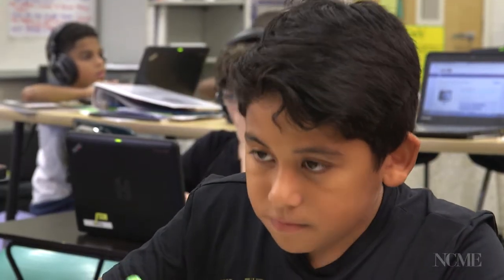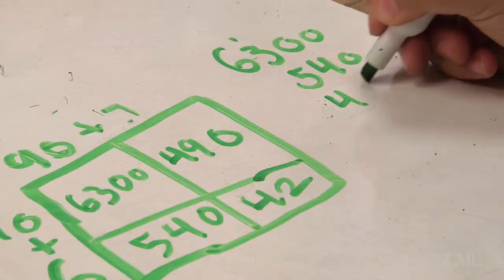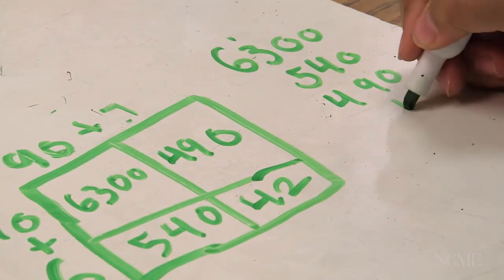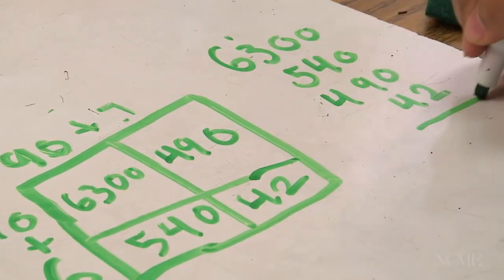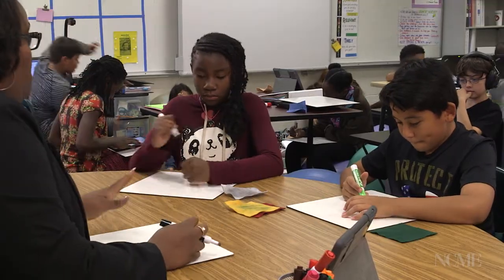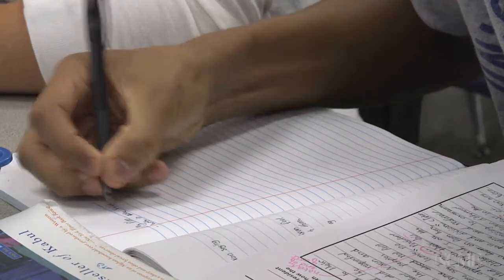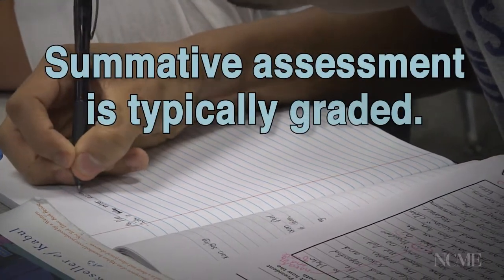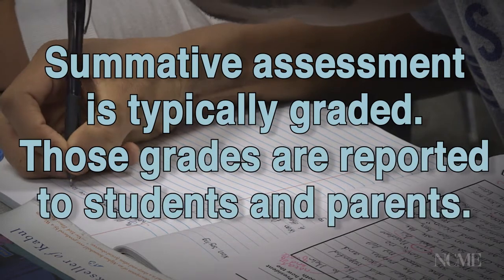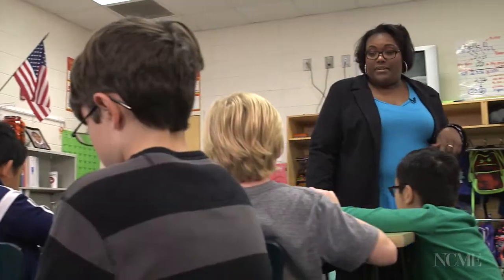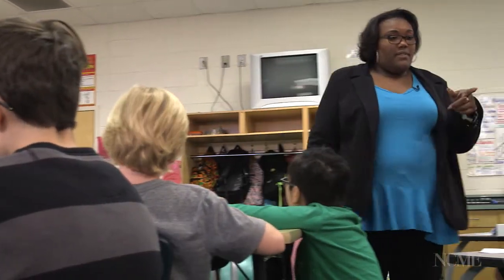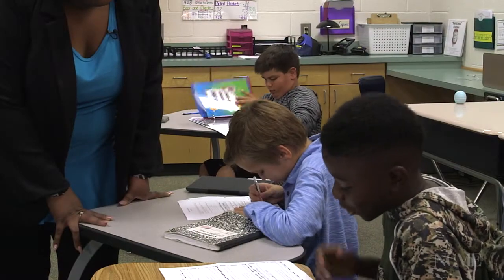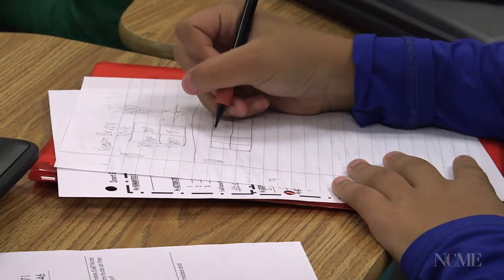Formative assessment is not typically graded. Instead, students receive feedback on the criteria for good work. Once they've revised the work and completed the other lessons in the unit, that's the time for a summative assessment. Summative assessment is typically graded, and those grades are reported to students and parents. Understanding the different types of assessment means using them in the most effective way and at the right time.